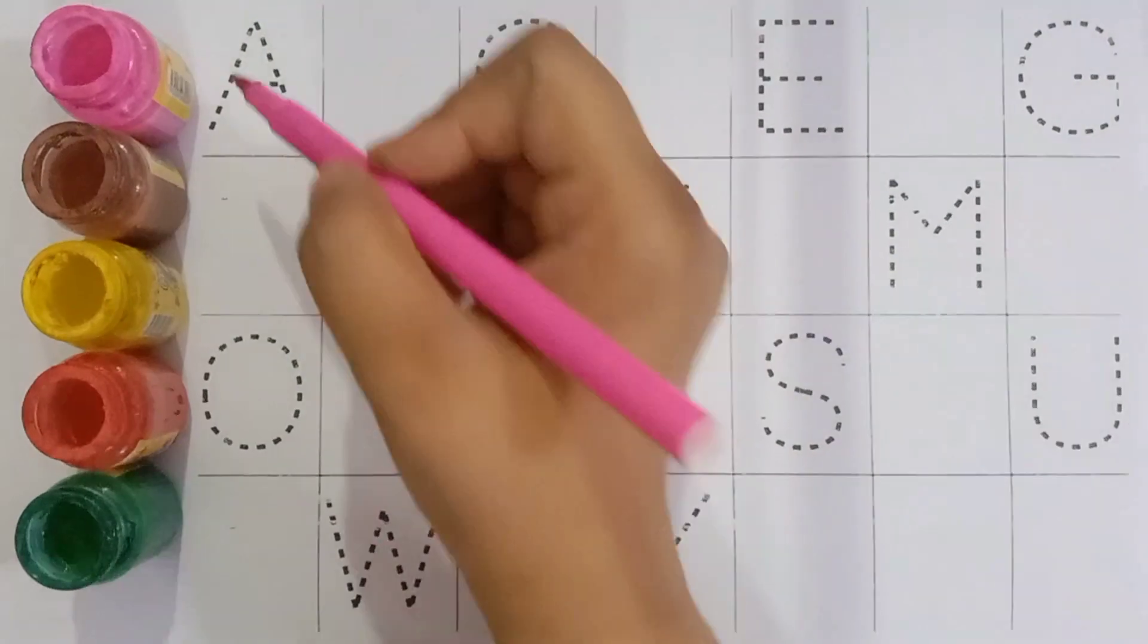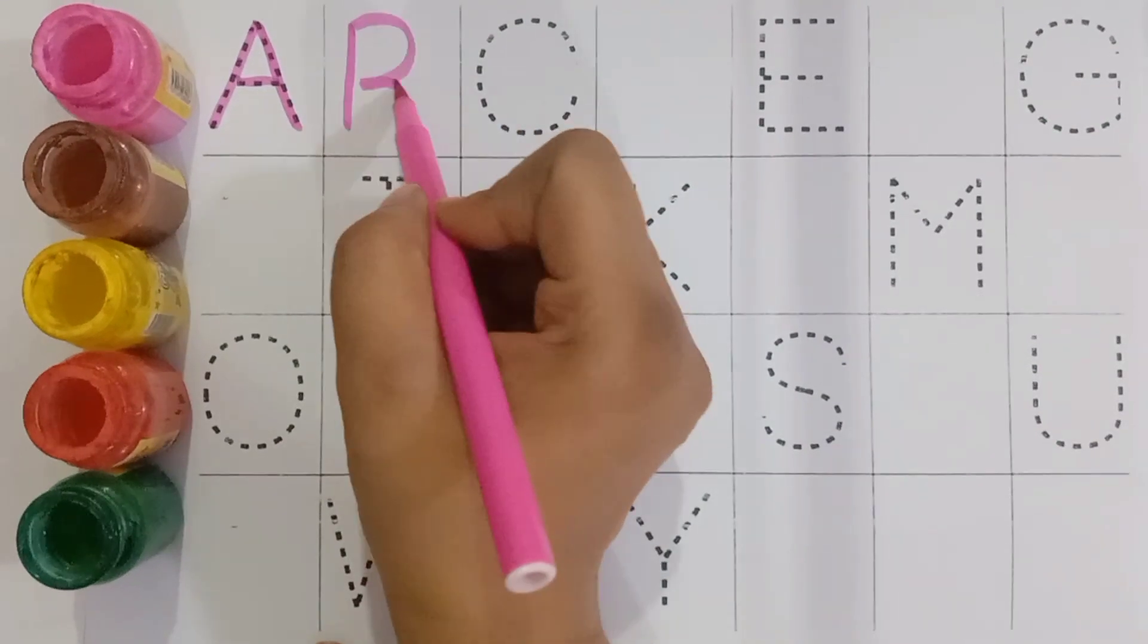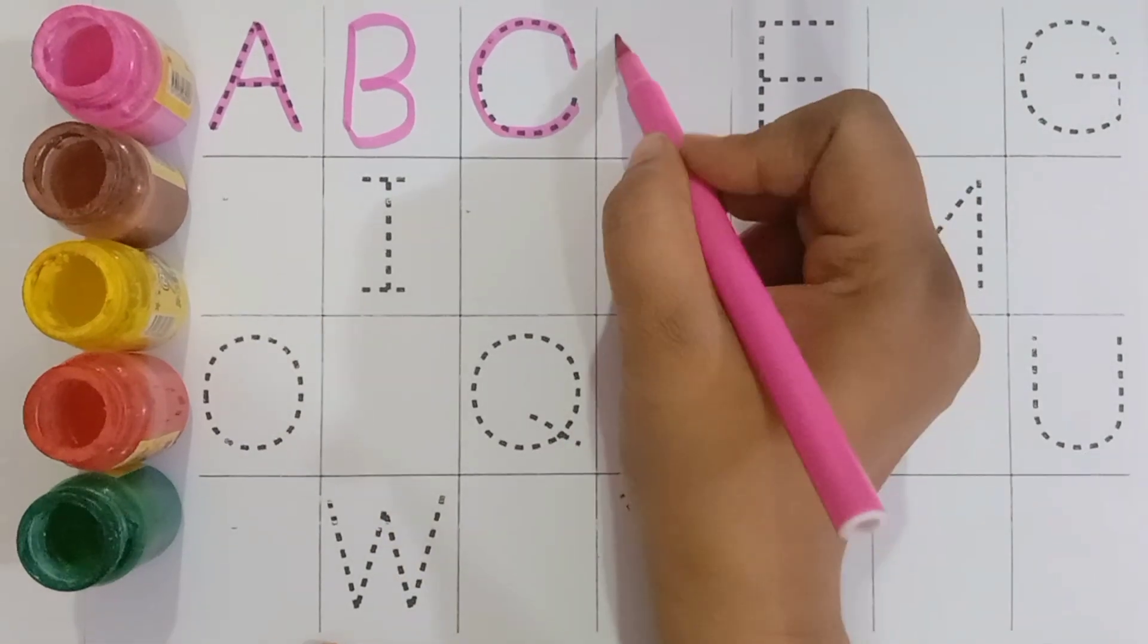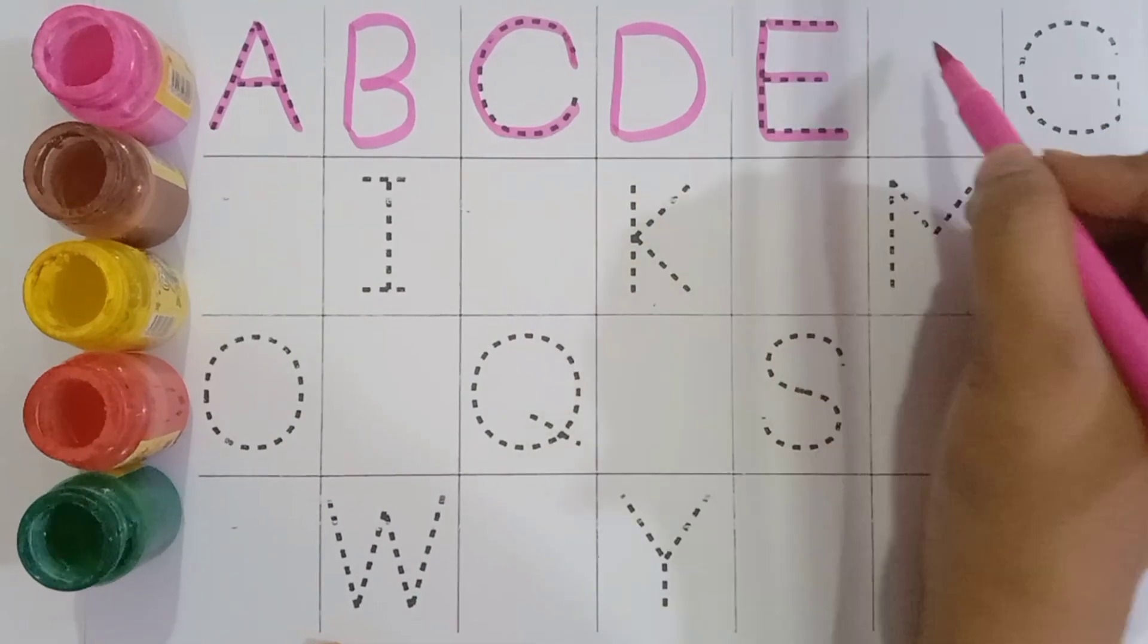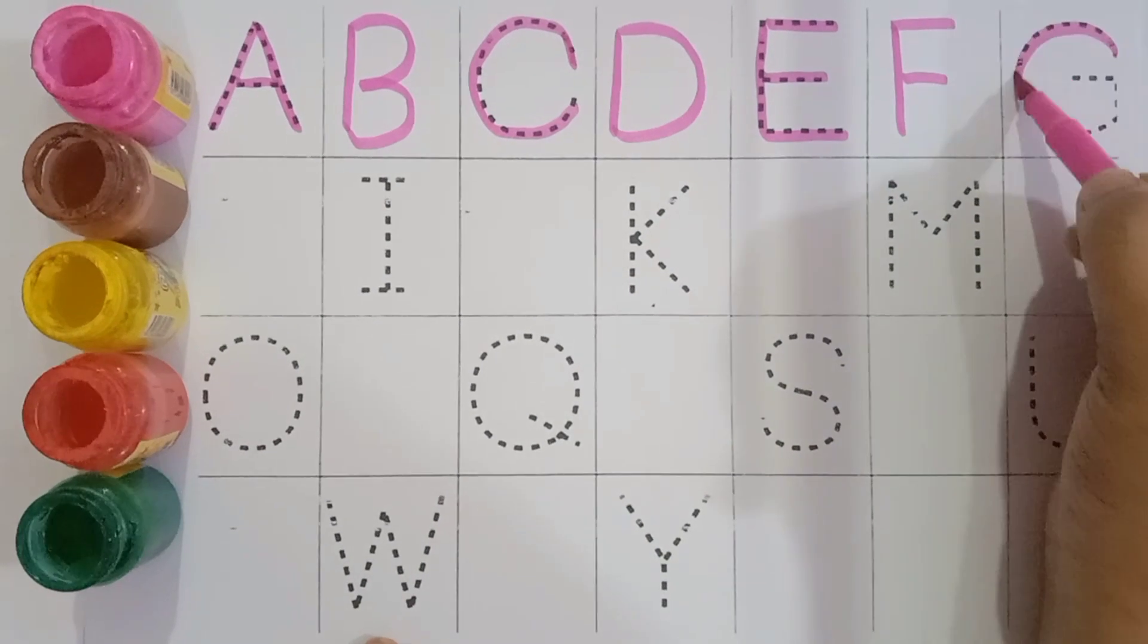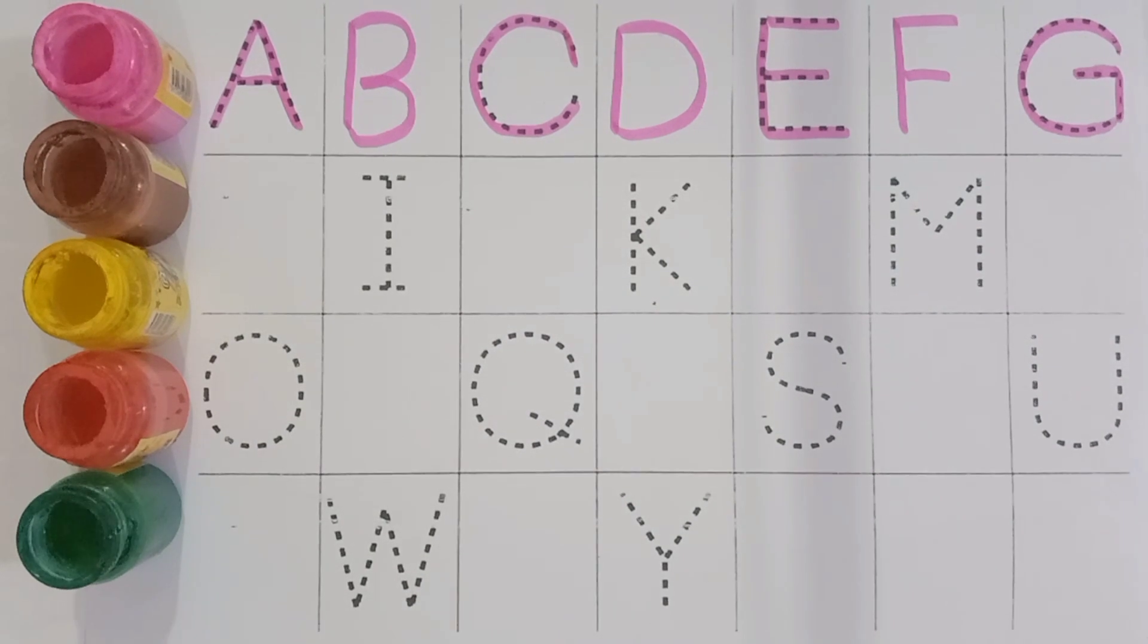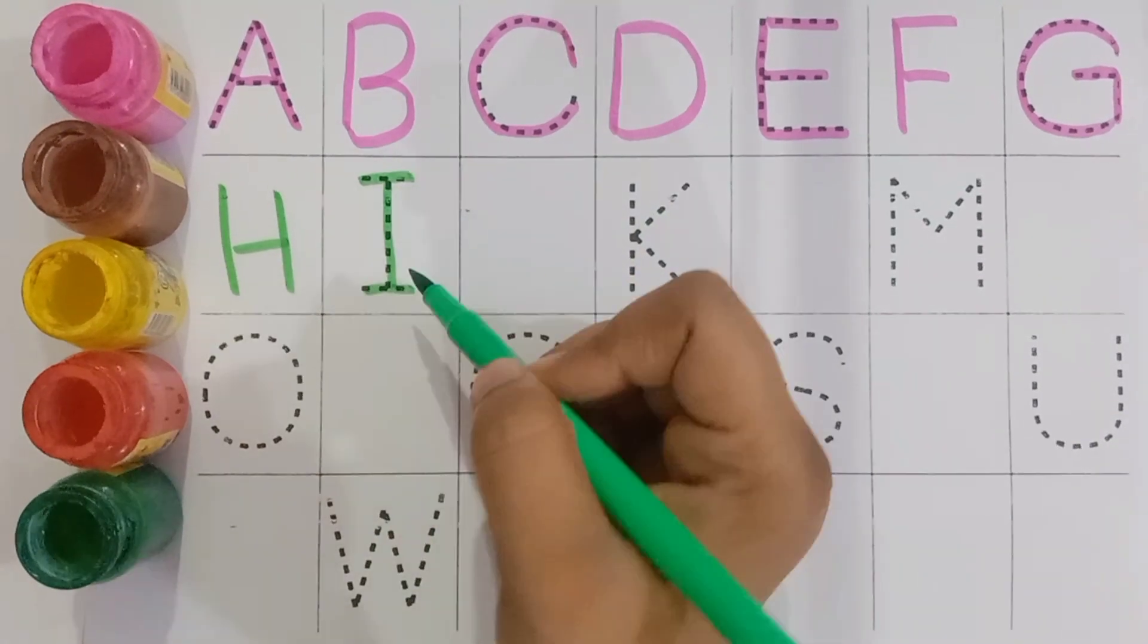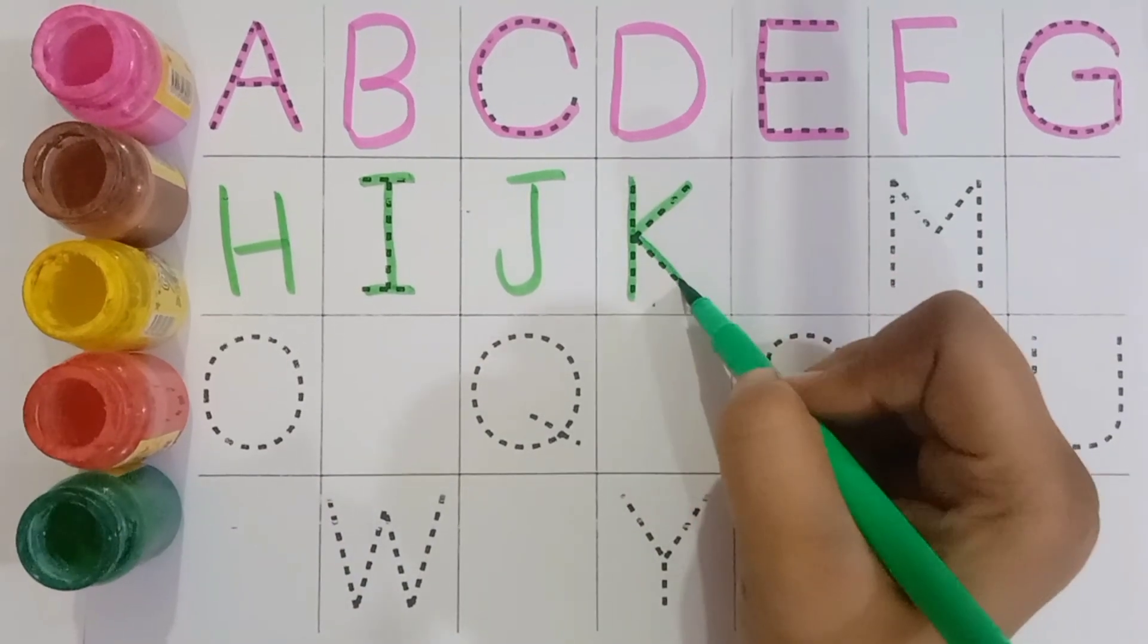A for apple, B for basket, C for cow, D for drum, E for elephant, F for fish, G for grapes, H for hen, I for ice cream, J for juice.